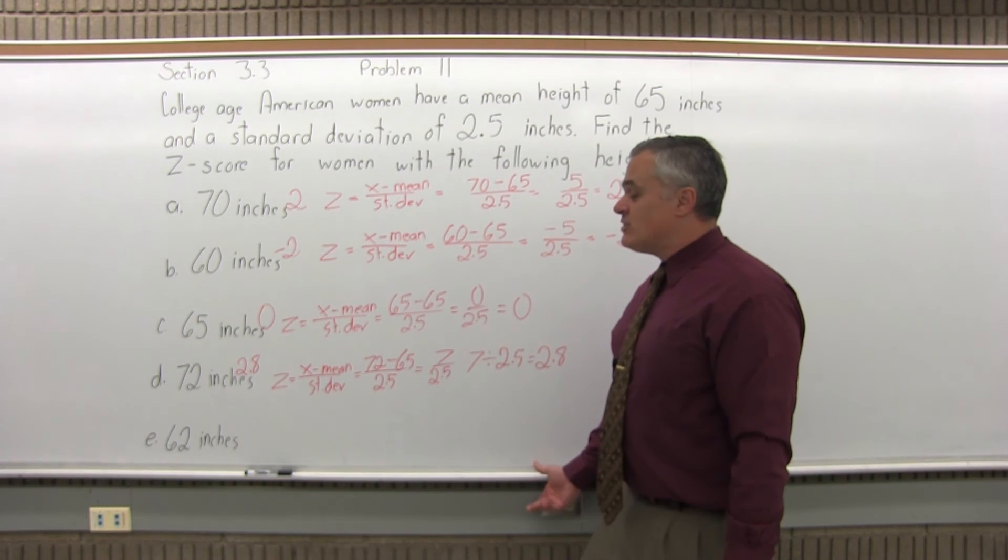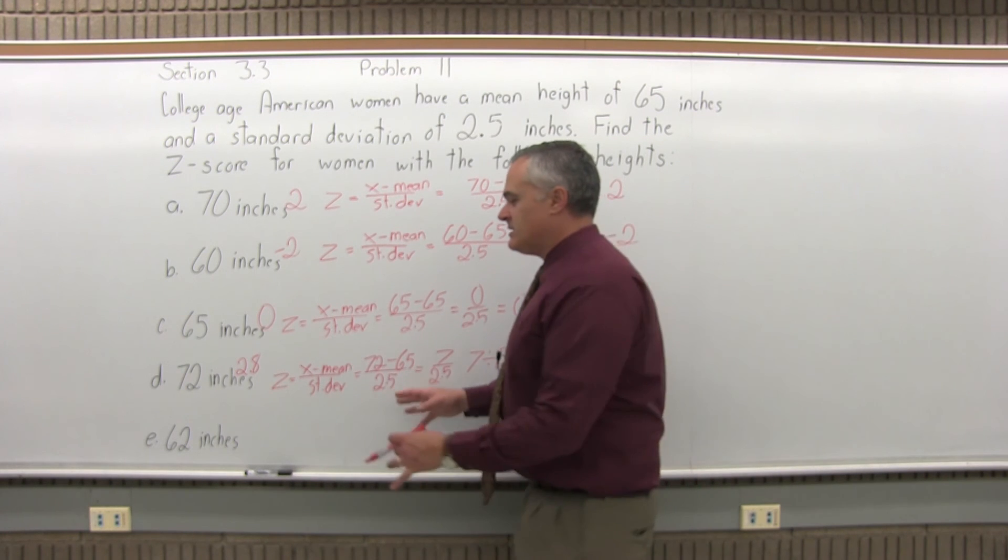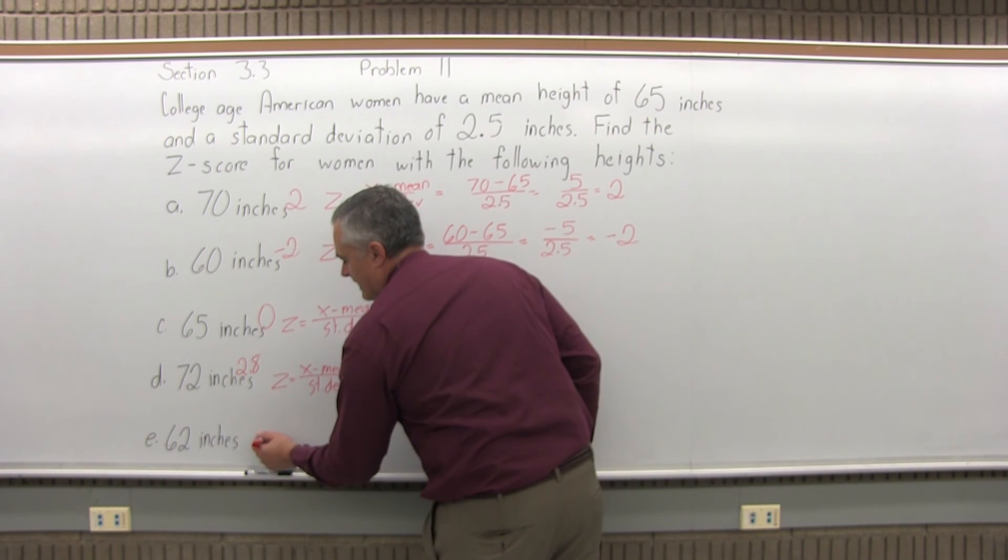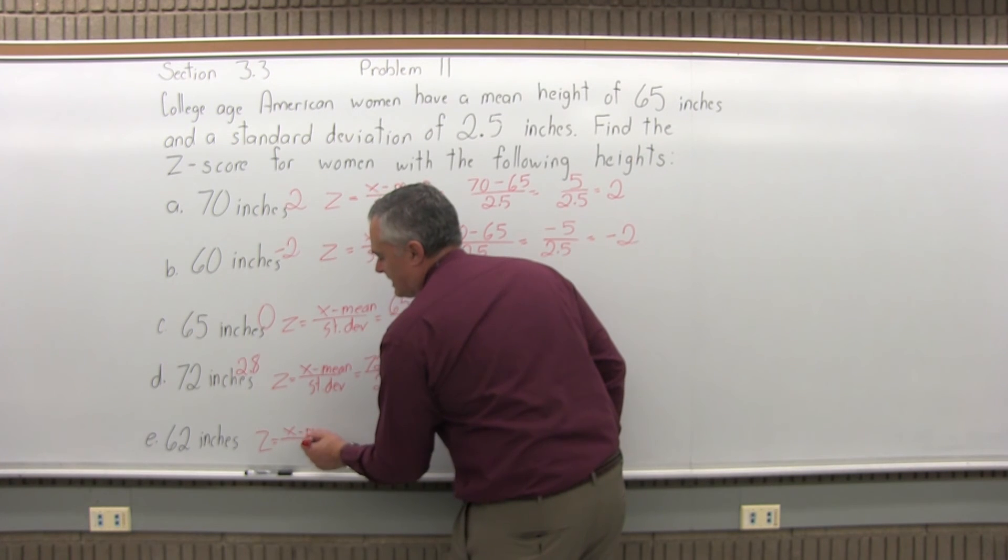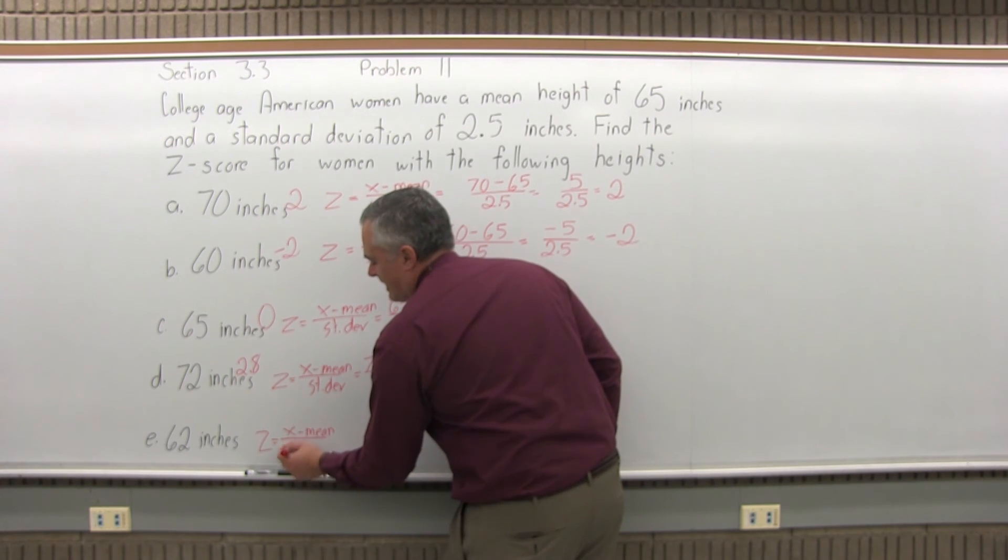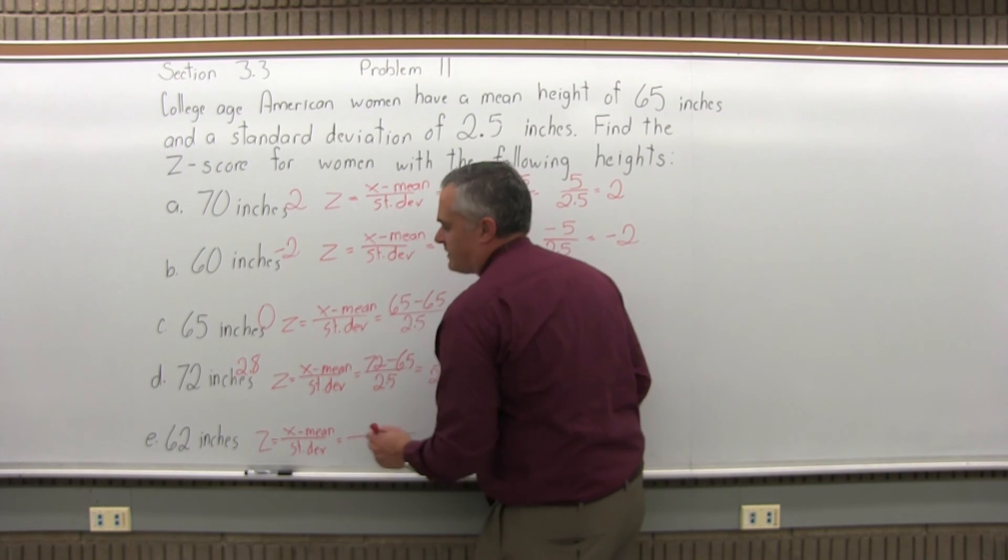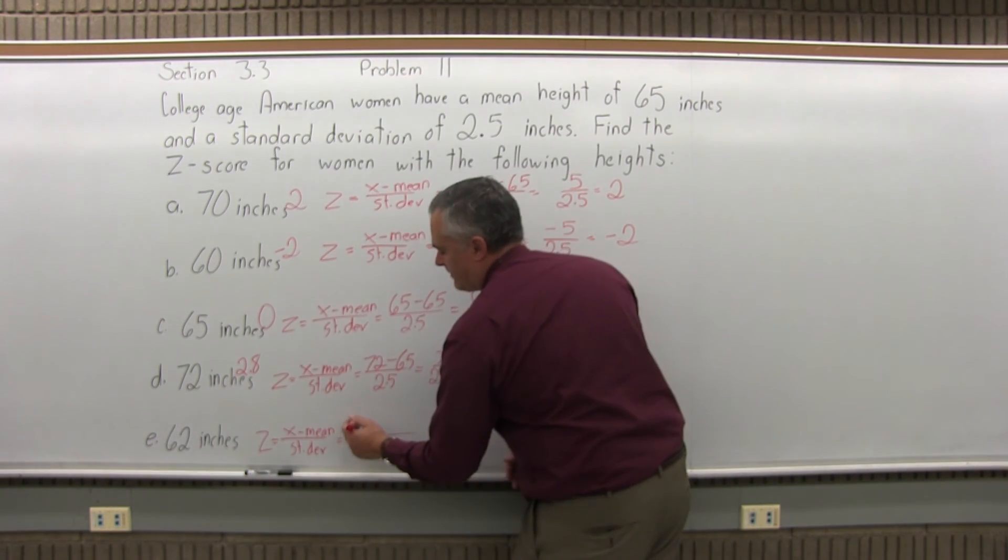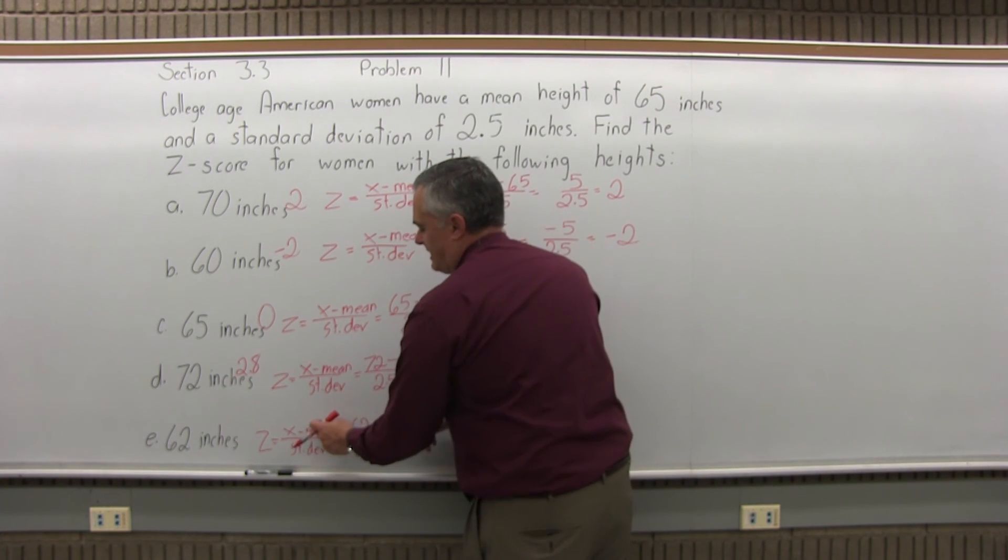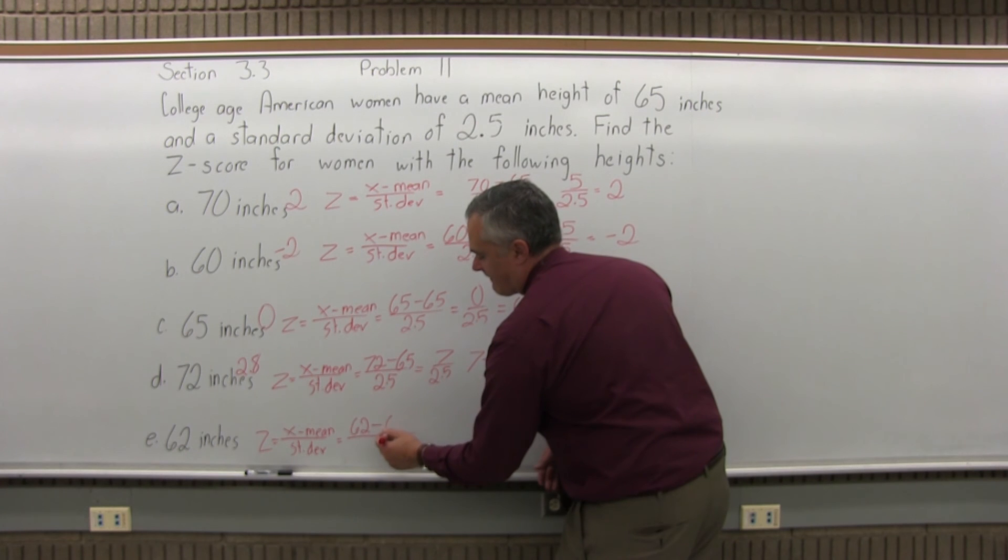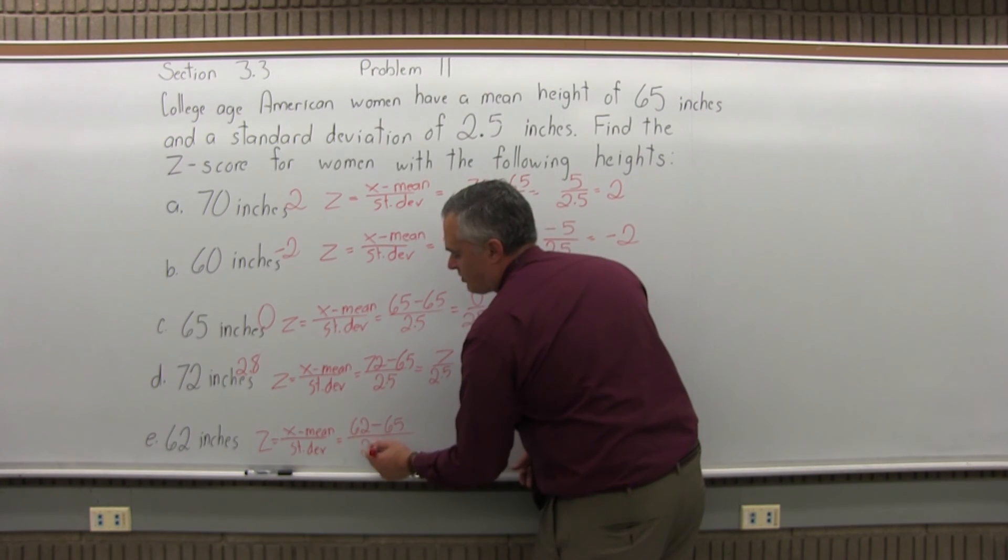And finally, 62 inches. That's 5 foot 2, a little shorter than average. I expect the z-score to come out negative. Same formula. z equals x minus the mean divided by the standard deviation. For this part, part e, the value of x is 62 minus the mean is still 65, the average height, divided by the standard deviation is 2.5.